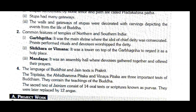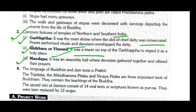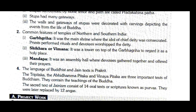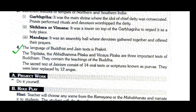Question two: Common features of temples of northern and southern India. The Garbhagriha was the main shrine where the idol of the chief deity was consecrated. There was also an assembly hall where devotees gathered together and offered their prayers.